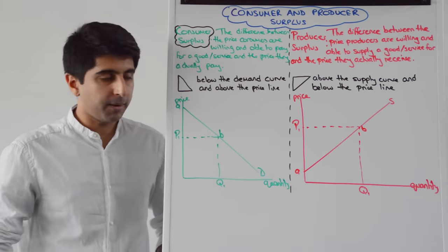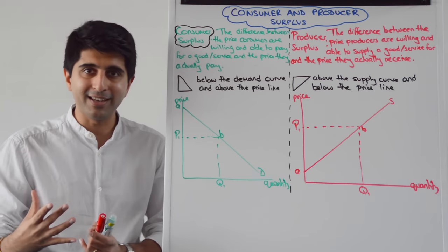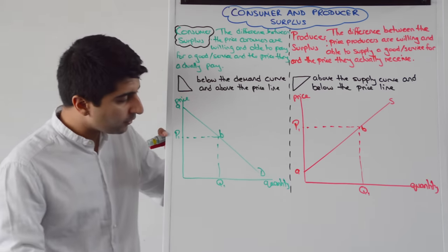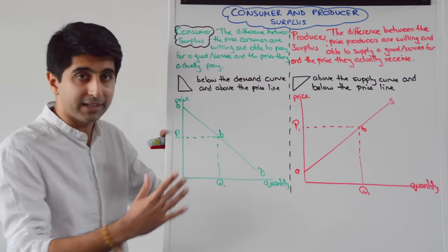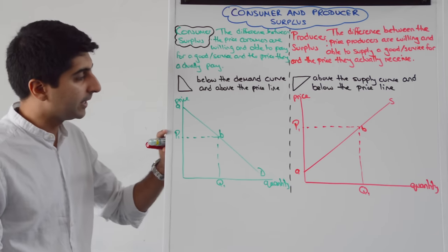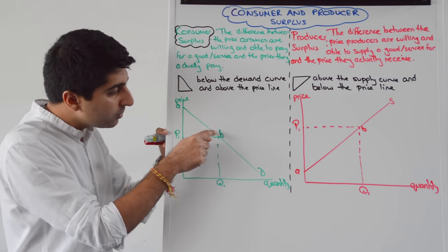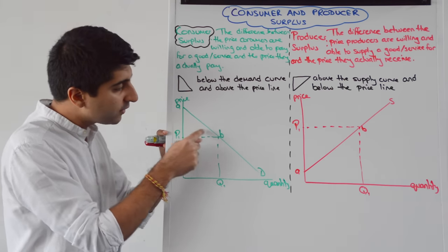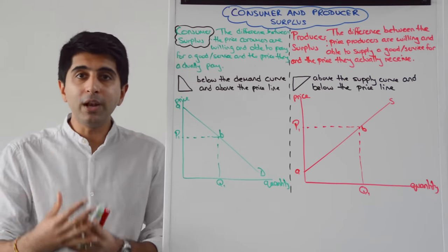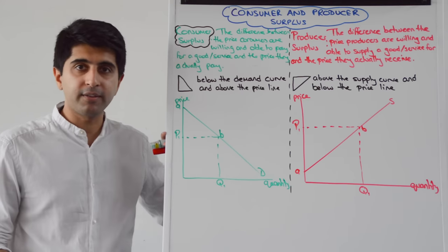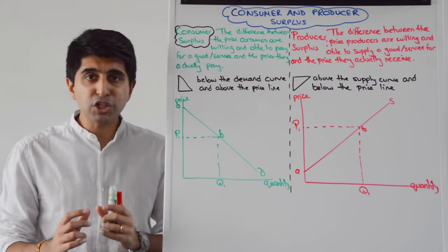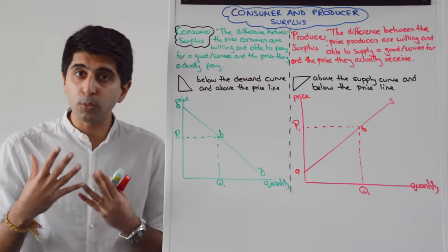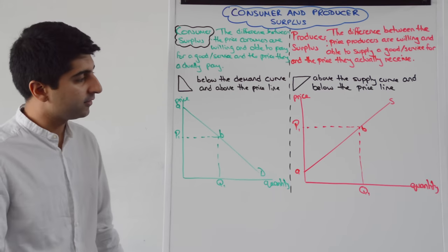Let's go to a diagram. I've drawn a demand curve which makes it easy to find consumer surplus. At price P1 and a quantity of Q1, you can see that there are consumers up here on the demand curve who were willing and able to pay a higher price than P1. By only paying P1, they are getting some surplus — that is consumer surplus.